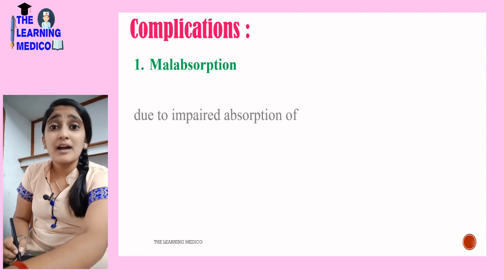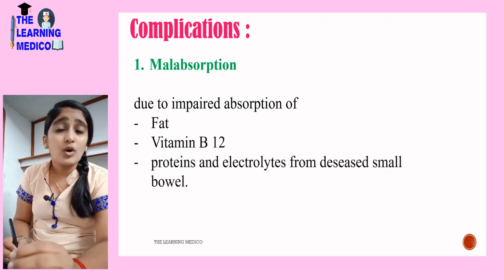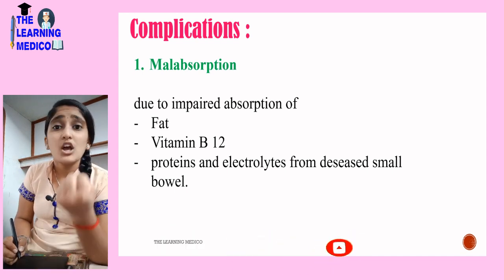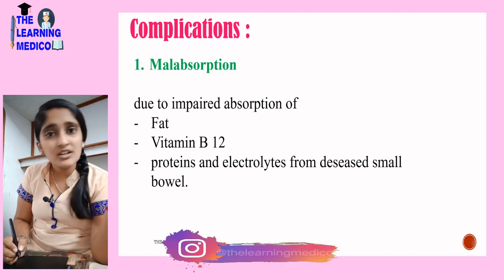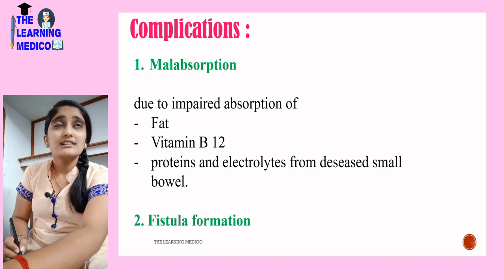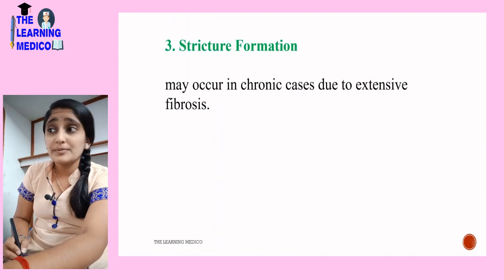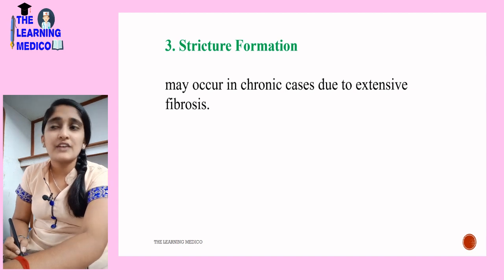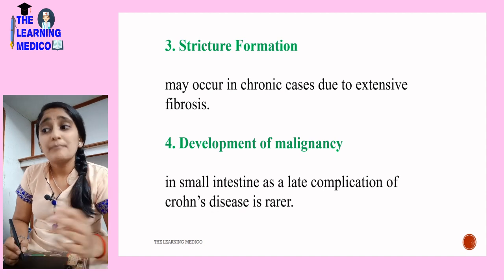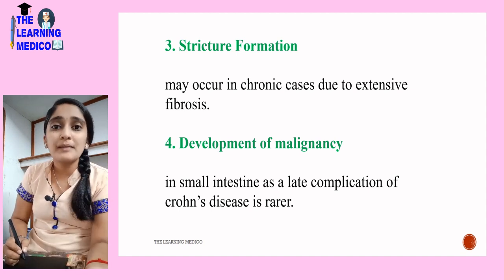The complications of Crohn's disease include: malabsorption, due to impaired absorption of fat, vitamin B12, proteins, and electrolytes from the diseased small bowel — inflammation destroys the absorptive cells, leading to malabsorption. Fistula formation occurs in long-standing cases. Stricture formation develops due to extensive fibrosis in chronic cases. Finally, development of malignancy in the small intestine is a rare late complication of Crohn's disease.